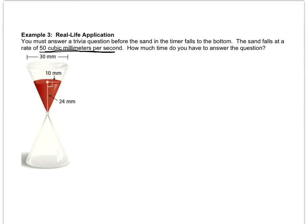So you're only going to use the 10 and the 24. This 30 is really not necessary. It just tells you how wide the timer is, but it's not relevant to the amount of sand right now because the sand only has a radius of 10. So I'll write the volume of my cone, one-third π r squared h, and now I'm going to plug in what I know. So I don't know the volume.